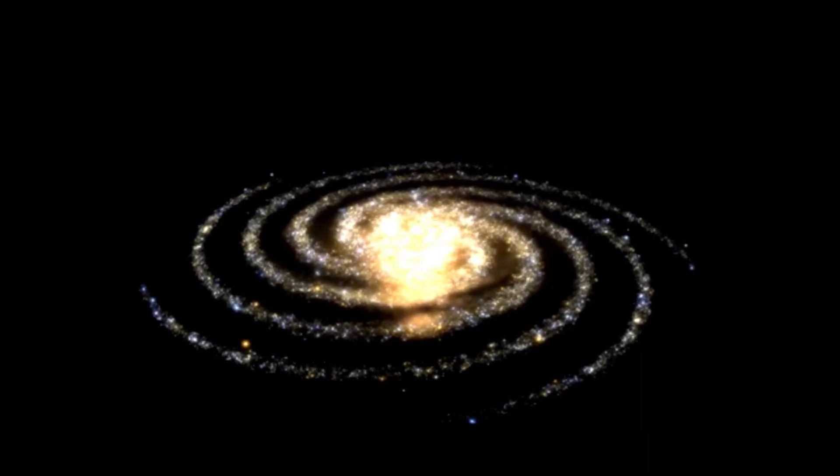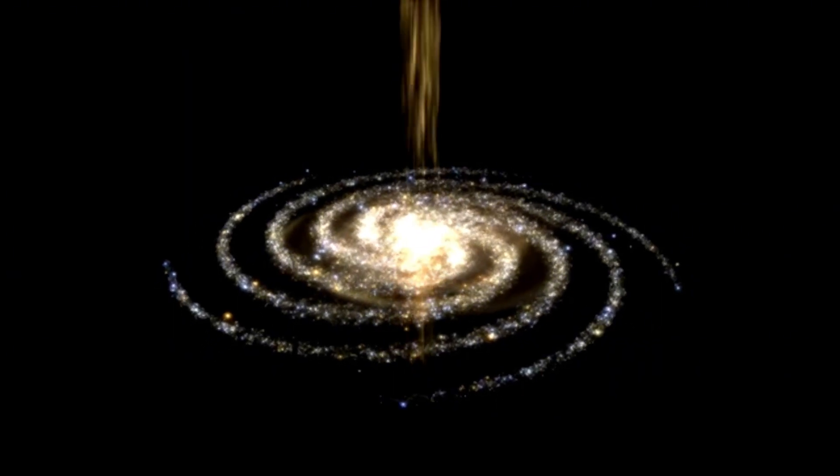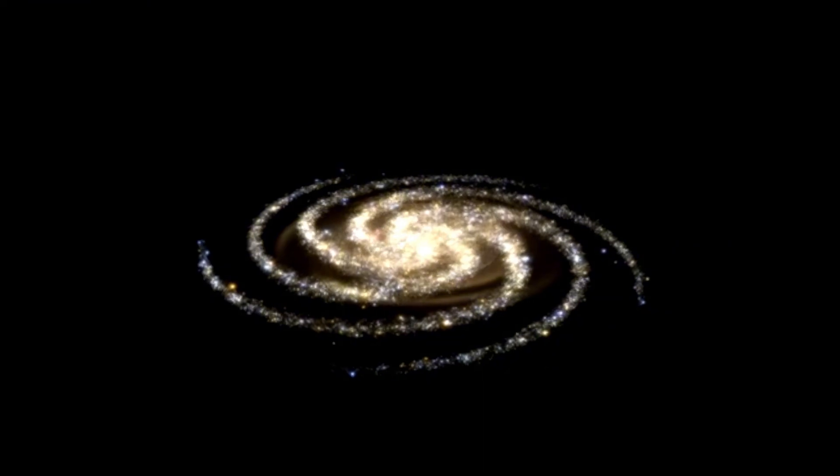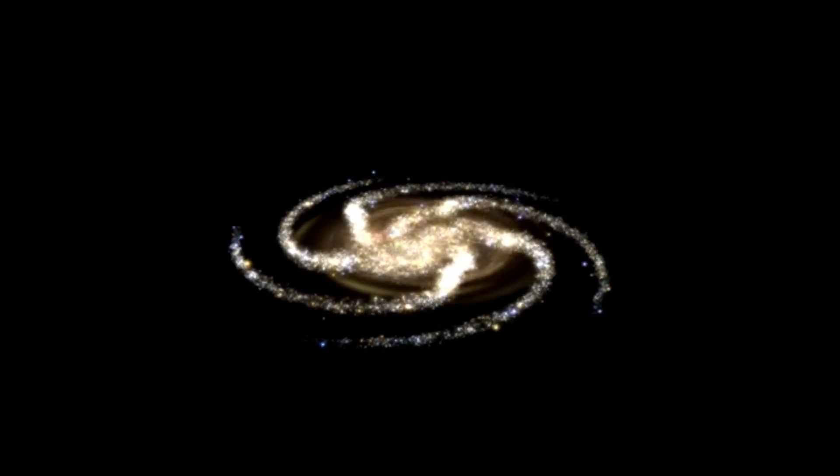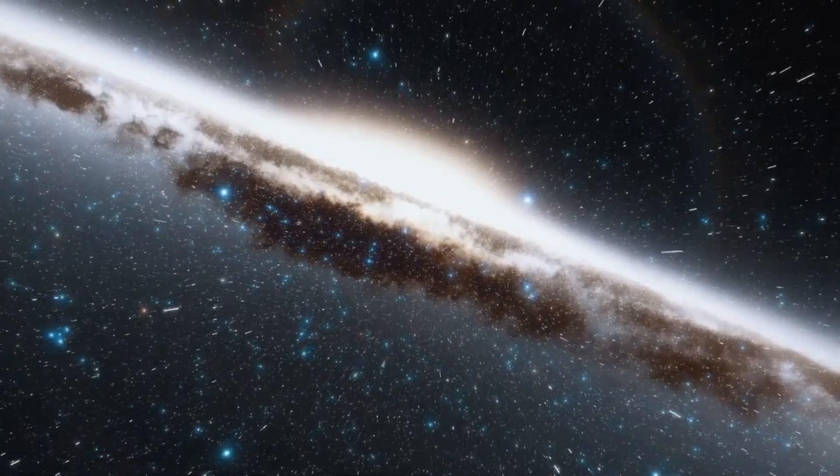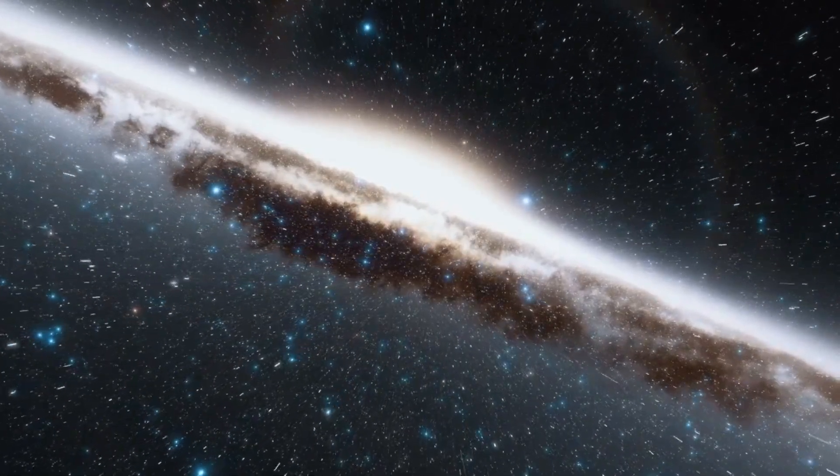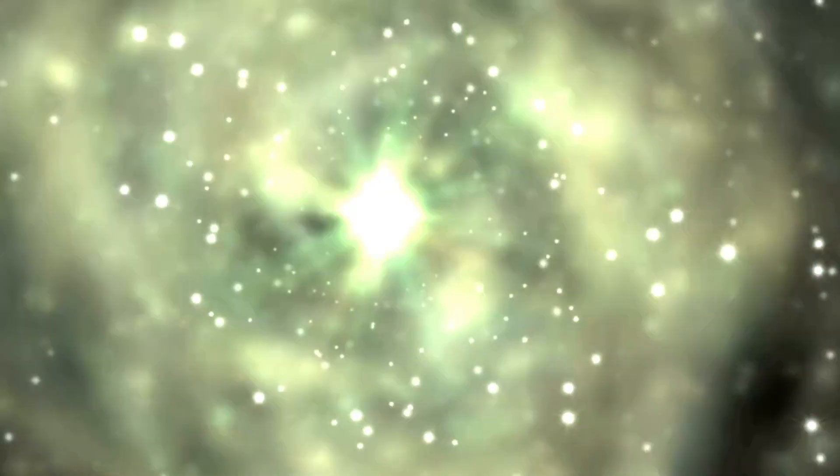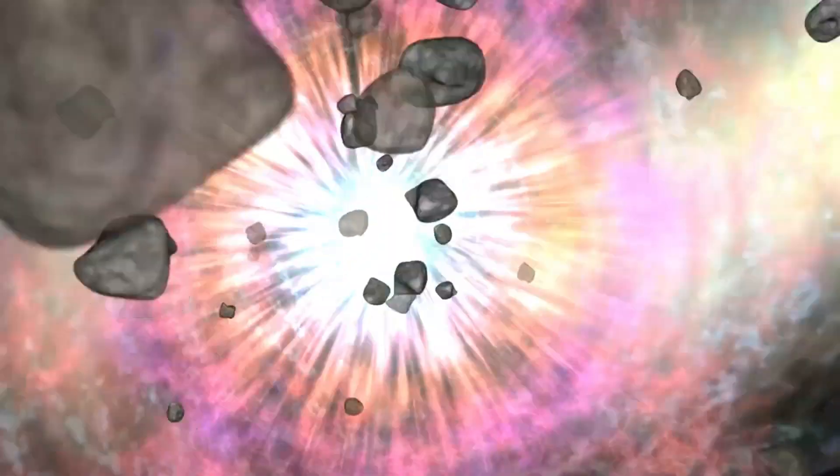The first layer is the event horizon, the outermost boundary surrounding a black hole. This event horizon marks the point of no return. Once an object crosses this threshold, it cannot escape the black hole's gravitational pull. At this stage, the object is either trapped at the edge of the event horizon or pulled further inward on its inevitable journey toward the singularity.